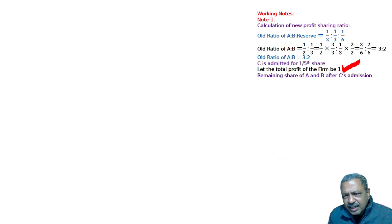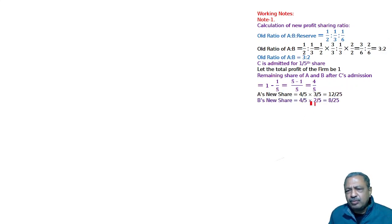Old ratio 3 is to 2 for A and B. C is coming for 1 fifth. 1 minus 1 fifth, the remaining share of A and B after C's admission is equal to 4 fifths. This 4 fifths will be divided in 3 by 5 and 2 by 5 between A and B. C gets 1 by 5 multiplied by 5 by 5, so all three have denominator 25. Therefore, the new ratio becomes A is to B is to C equals 12 is to 8 is to 5.